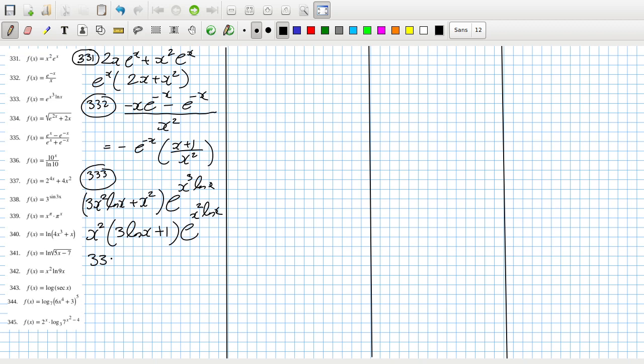334. Bring down the power, reduce the power by 1, and then differentiate what's inside the bracket, which will be 2 e to the 2x plus 2. Cancel all the 2s.